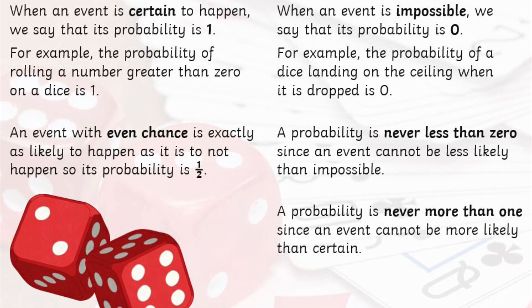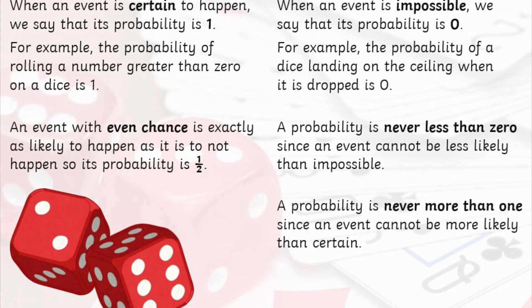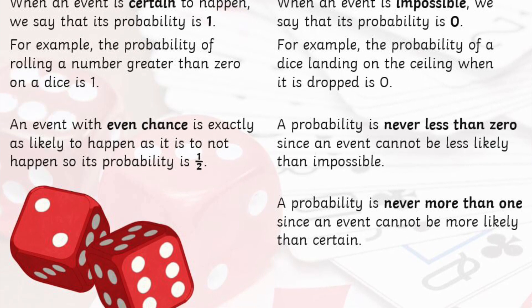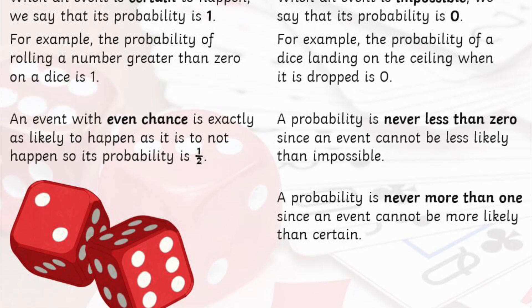An even chance is halfway between certain and impossible, so we can refer to it as 1 over 2, or a half, because it is half likely to occur and half likely not to occur.